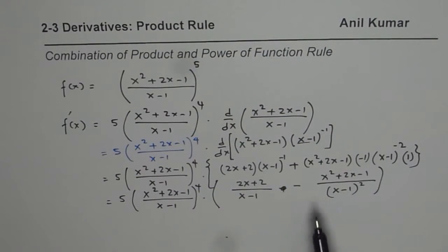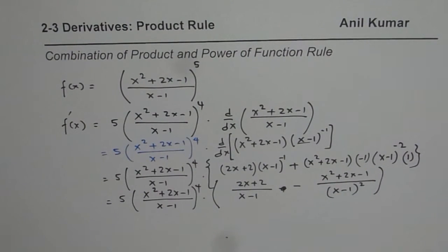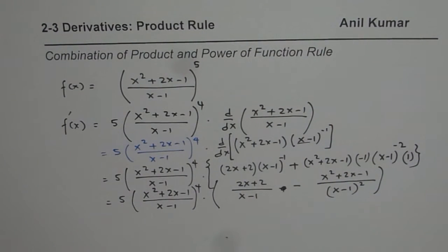So in the product rule, you may be asked such a question where we find the derivative of a quotient. This example combines the product rule with the power rule, and also teaches you how to use a quotient with negative exponents and apply the product rule. I hope that is helpful. Thank you and all the best.